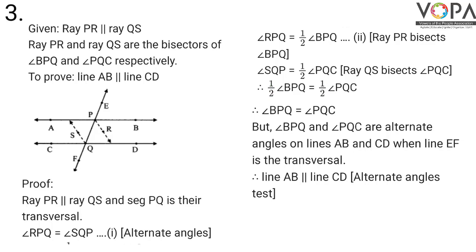Angle BPQ and angle PQC are alternate angles on lines AB and CD when line EF is the transversal. Therefore we can say line AB is parallel to line CD. Reason: alternate angles test.